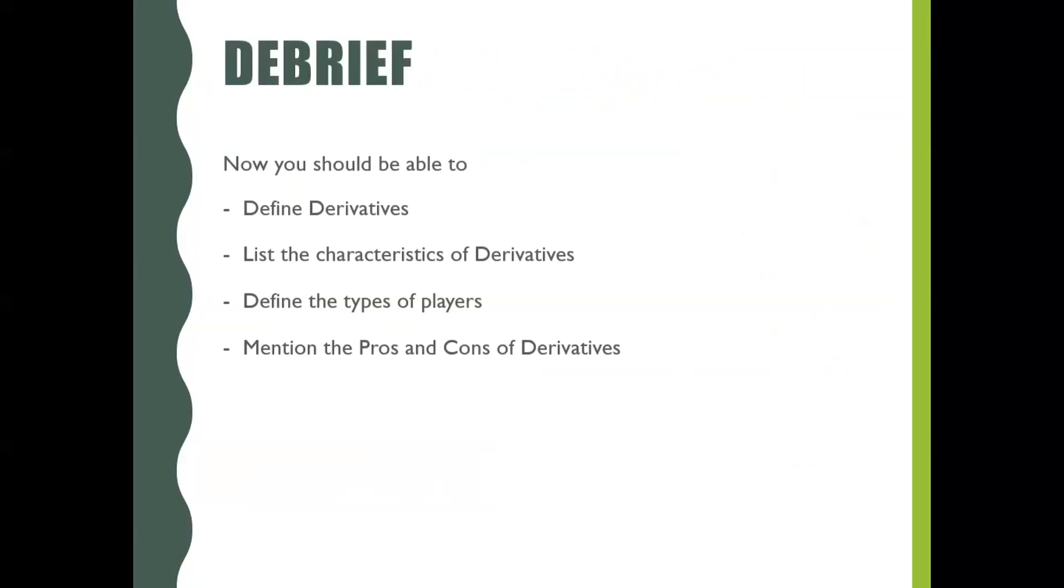Now, let's look at the types of derivatives. Majorly, there are four types of derivatives: forwards, futures, options, and swaps.